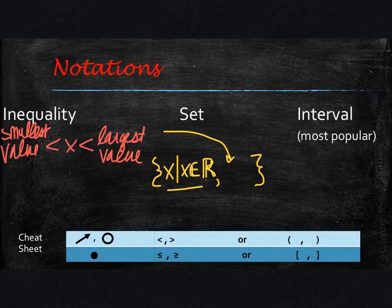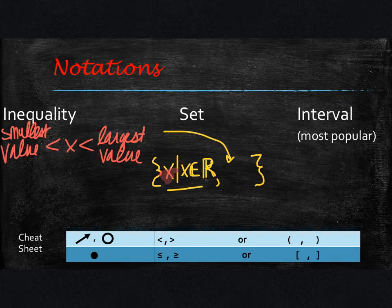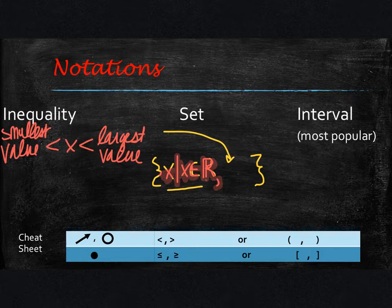Set notation is just a more mathematical way of writing it. How you would read this is: x such that x is an element of all real numbers, such that x is between the smallest and the largest value. That's how you would read it.